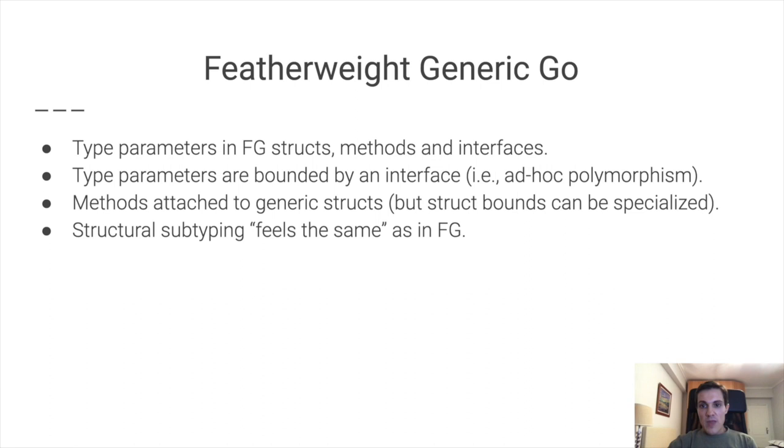Having established Featherweight Go, we then move to Featherweight Generic Go. The idea here was to add type parameters to structs, methods, and interfaces. Type parameters will have an interface bound, which allows us to essentially represent ad hoc polymorphism. Methods will be attached to generic structs, but bounds of the generic struct can be specialized.